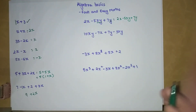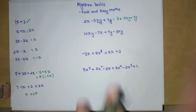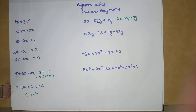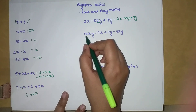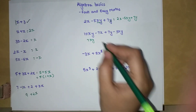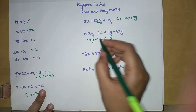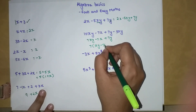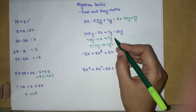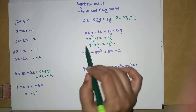Now we have 10xy minus 7x plus 7y minus 3xy. We have two terms with the same variable xy — these are called like terms. So 10xy minus 3xy gives us 7xy. Minus 7x has no other x term, so we keep it. Plus 7y also has no matching term. We can factor out 7 from the last two terms: 7xy minus 7x plus 7y, or write 7 outside a bracket as a practice for complicated sums.